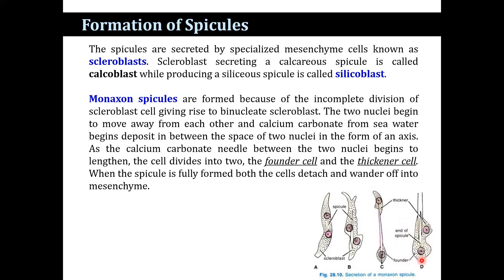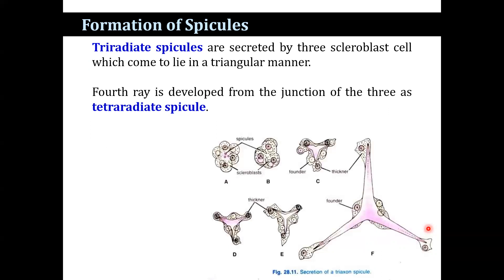One cell becomes the founder cell and the other becomes the thickener cell. When the spicule is fully formed, both cells detach and wander off into the mesenchyme. Tri-radiate spicules are secreted by three scleroblast cells arranged in a triangular manner. When a fourth ray develops from the junction of the three, it is known as a tetraxon spicule. The formation process is the same as for monaxon spicules.